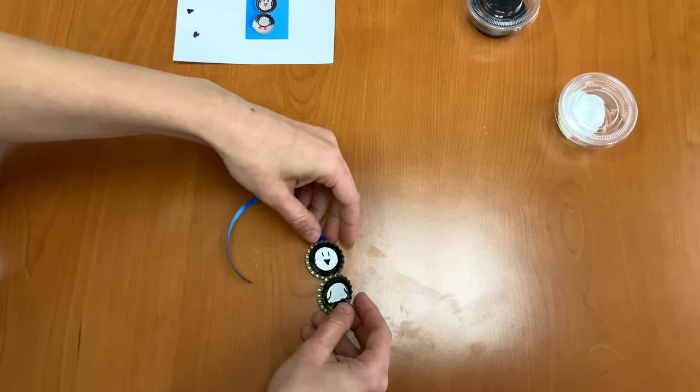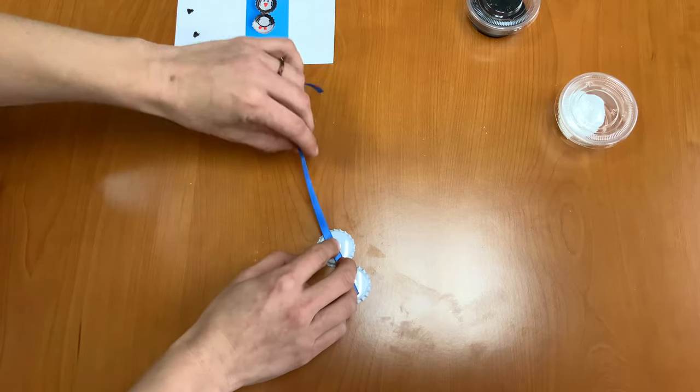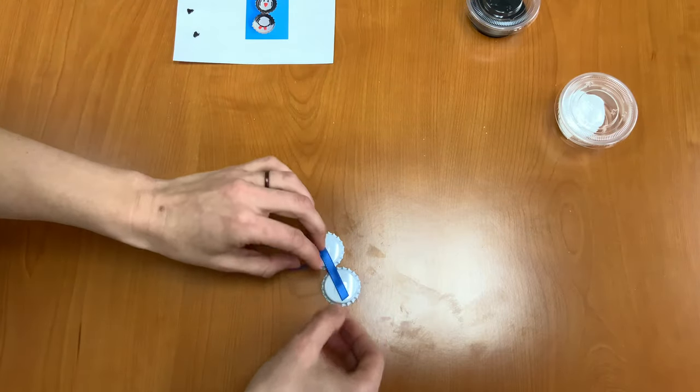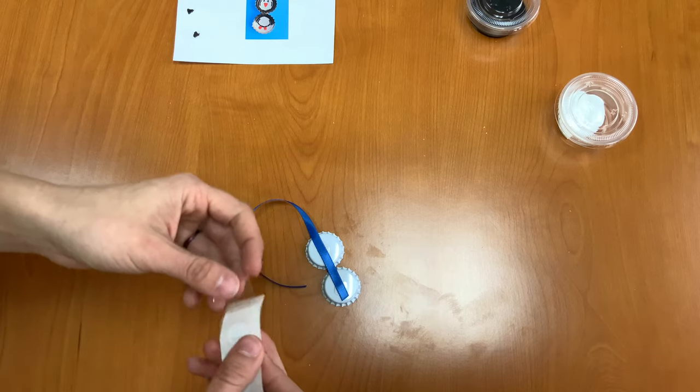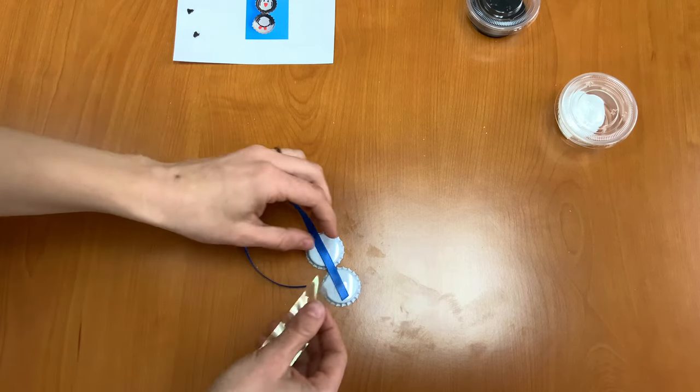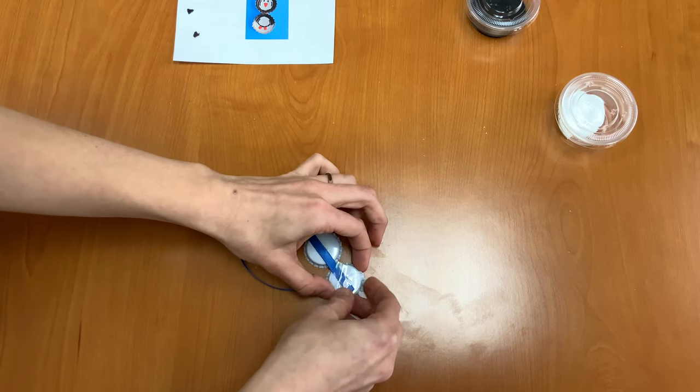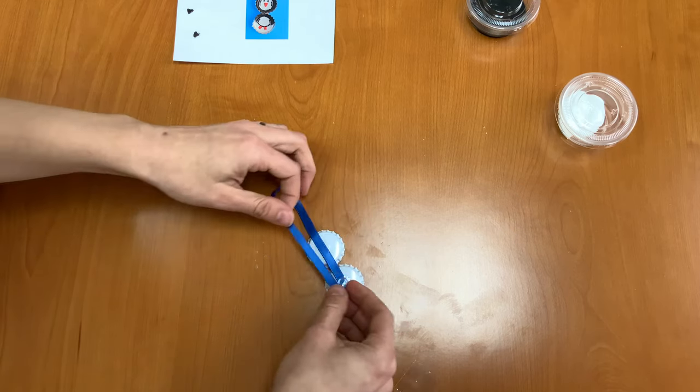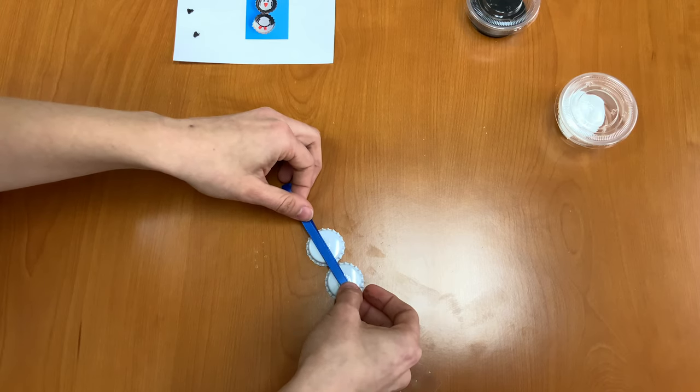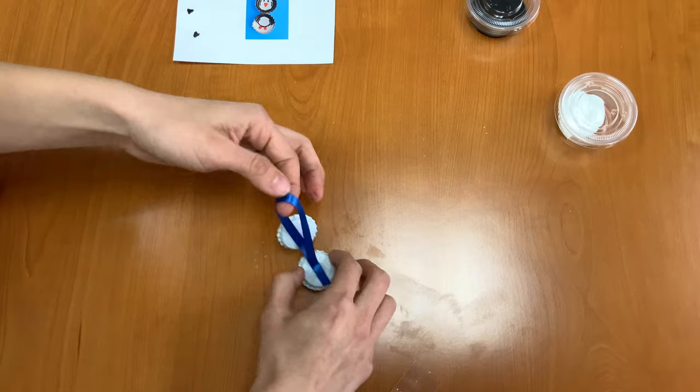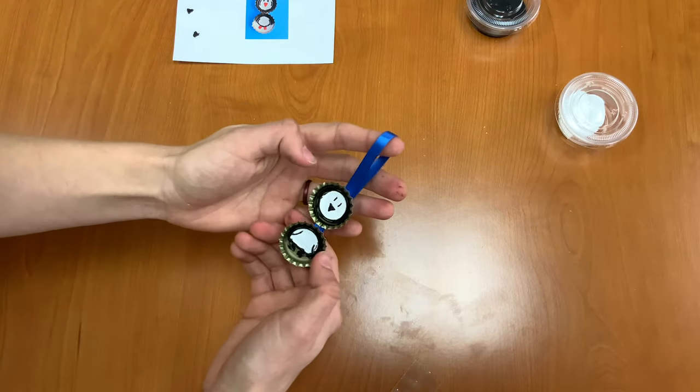Now we want to flip these over and we're going to make our loop. So one more glue dot at the very bottom on top of the ribbon this time. And we're going to bring the ribbon down and just glue it right there. And now we have our cute little ornament.